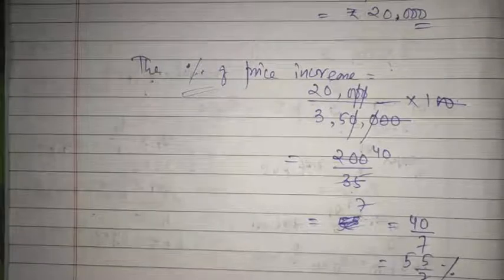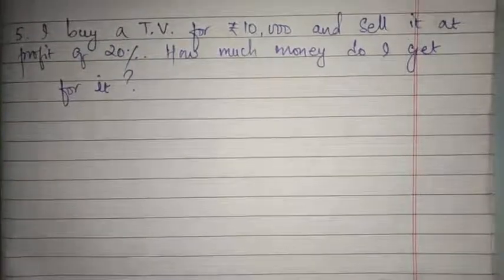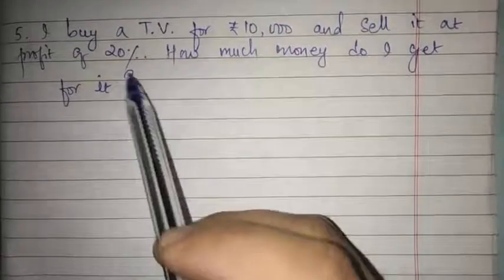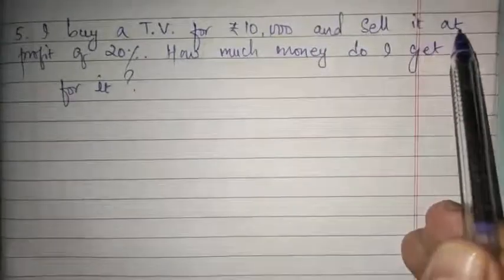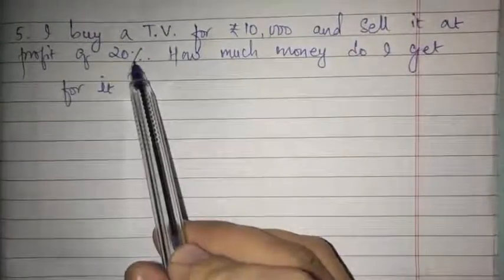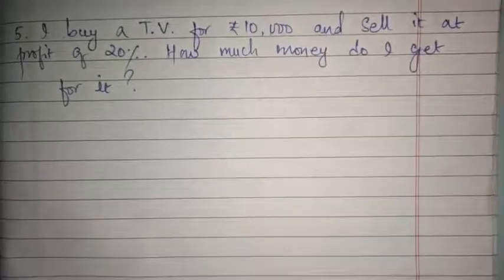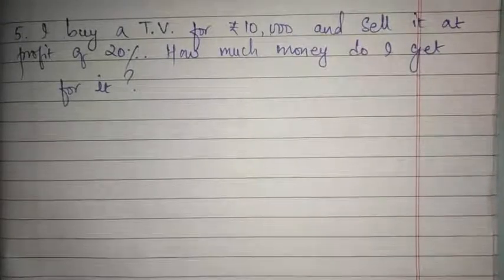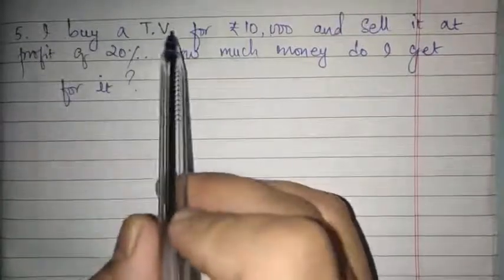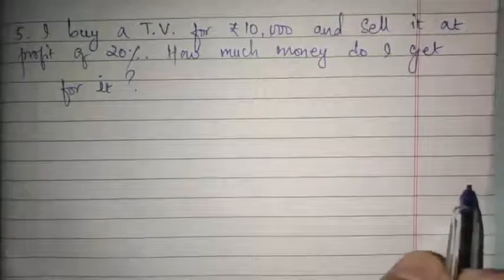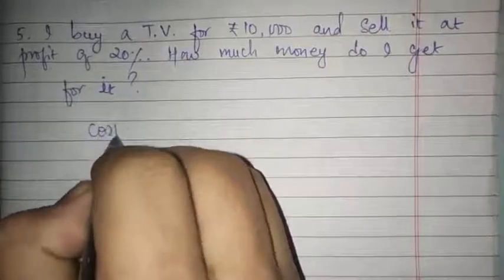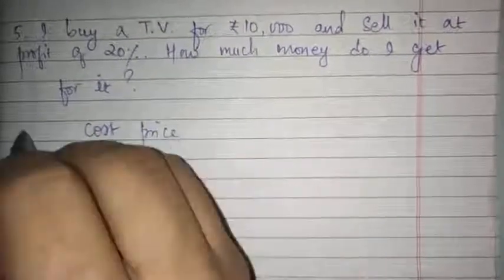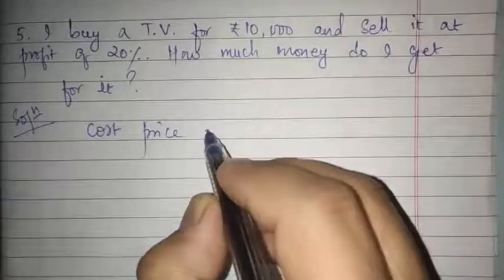Question number 5 states: I buy a TV for rupees 10,000 and sell it at a profit of 20%. How much money do I get for it? This question deals with profit and loss — buying means cost price. So the cost price of the TV is rupees 10,000.